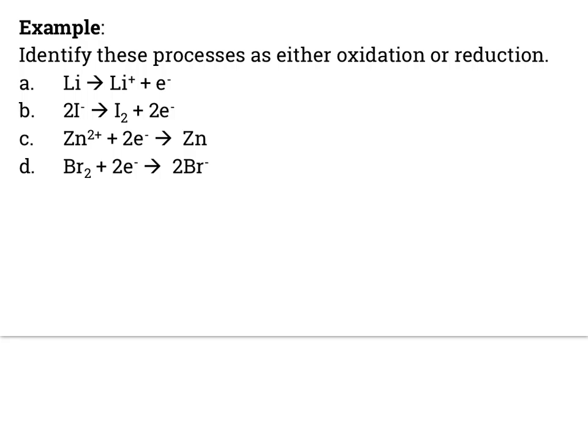Alright. Hopefully you had answers. So you ready? There you go. In this case, we start with lithium. Now we have lithium and some other electrons. That means lithium had to lose those, which means lithium oxidized. We started with iodide. We produced electrons, oxidation. This one required electrons to make zinc. That means it gained them, reduction. This one required them, it gained them, reduction.